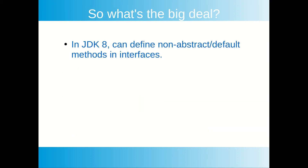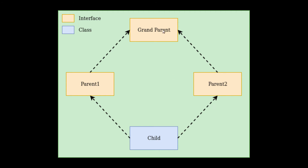Now you may ask, so what's the big deal now? Ever since Java 8 released, we can define default methods in an interface. A default method is a concrete implementation of a method in an interface. So you can see there are three interfaces — grandparent, parent1, and parent2 — and a class child. Parent1 and parent2 inherit from grandparent, and child inherits parent1 and parent2. If there is a default method in parent1 and a default method with the same signature in parent2 as well, when we try to execute that method from child, the compiler cannot determine which method to be executed. So this ambiguity arises again in Java 8.